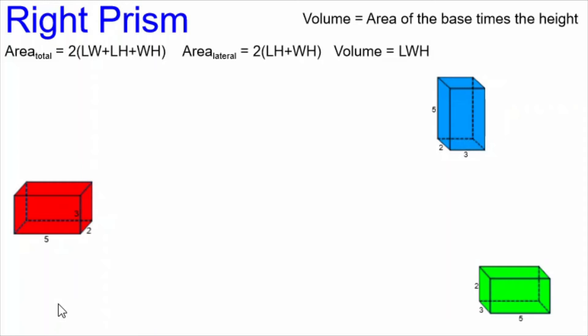Today's Daily Dose of Math is about the right prism. You might think of this as just being a box. And yes, boxes are often in the shape of right prisms, also known as rectangular prisms.